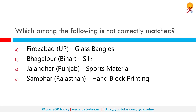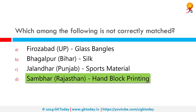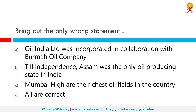Which among the following is not correctly matched? Sambar to hand block printing is not correctly matched. Sambar is near Ajmer in Rajasthan and Sambhar Lake is a famous place for salt production. Sanganer and Jaipur, which are also in Rajasthan, are famous for hand block printing.